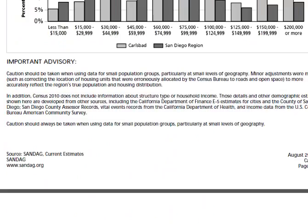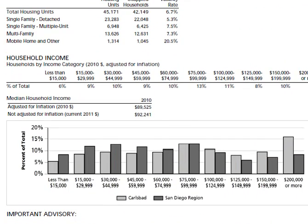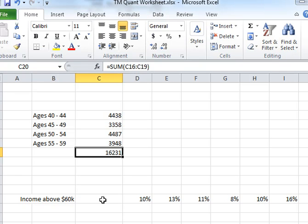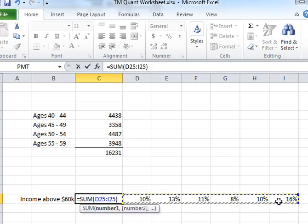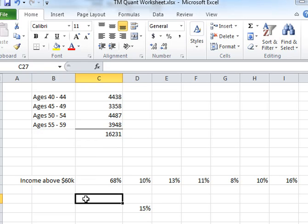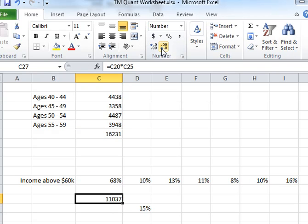The other important segmentation in my analysis is income, because my service is only open to folks with some extra disposable income. I've specified they need a household income of $60,000 or above. That means I'm targeting everyone from the 10% of Carlsbad's population in that range all the way up to people making $200,000 or more. I add these six percentages together to get the total percentage of people in Carlsbad with household incomes above $60,000, and I get 68%. Applying that 68% to my number of 16,231 women gives me 11,000 women who meet my exact demographic.